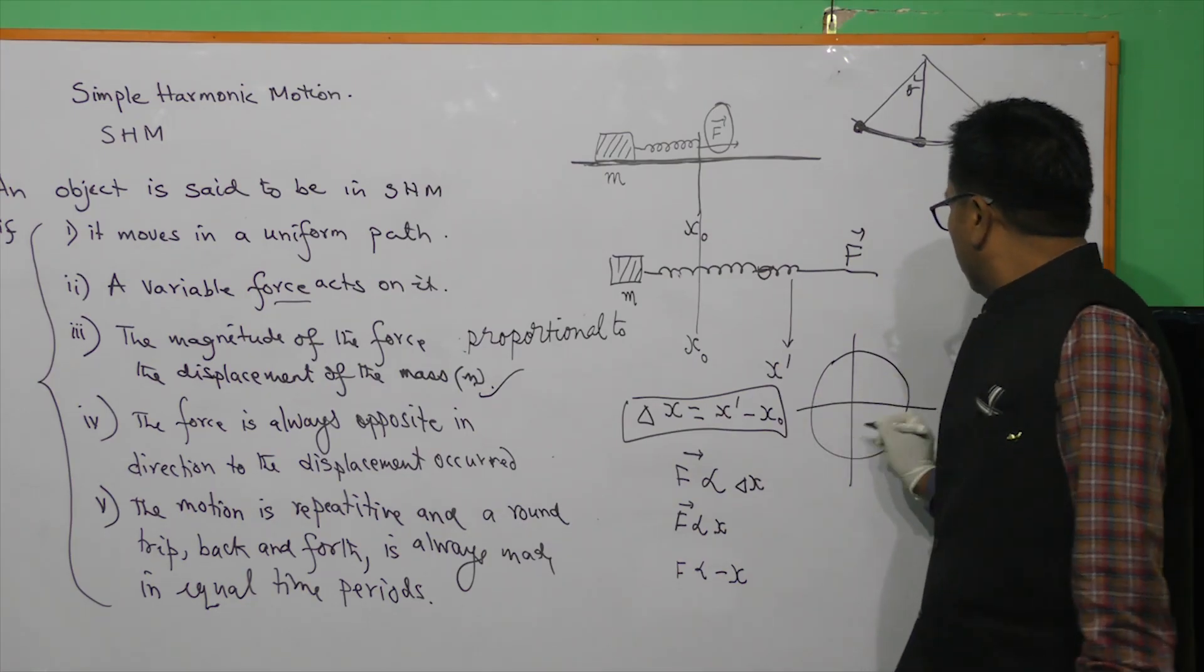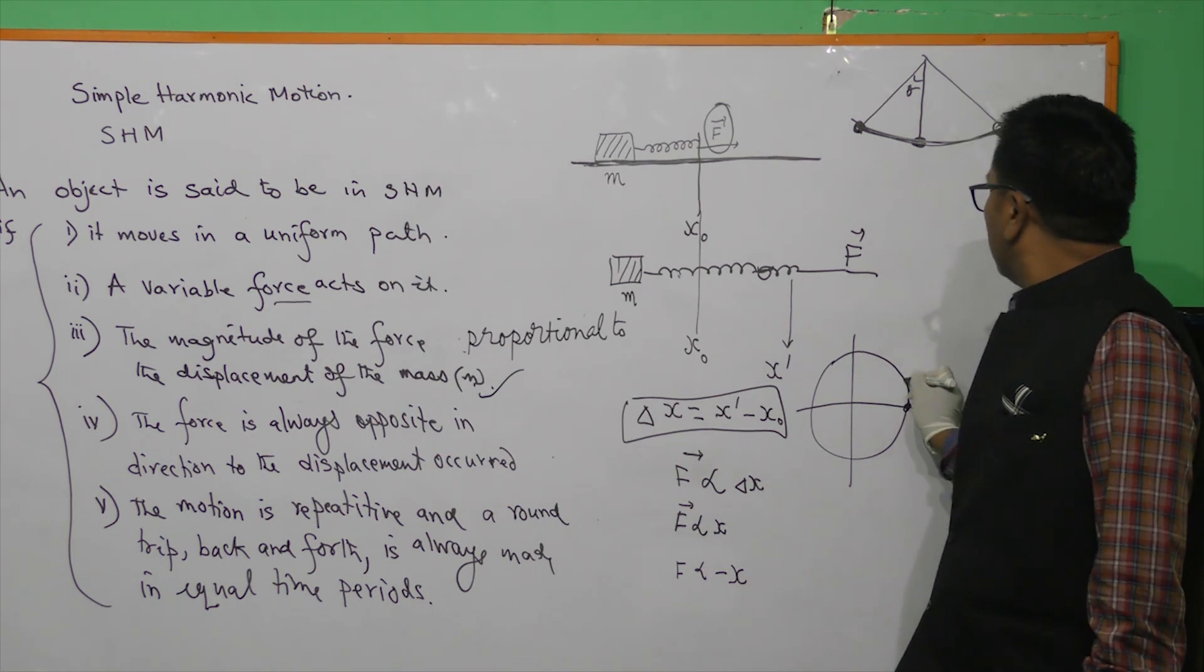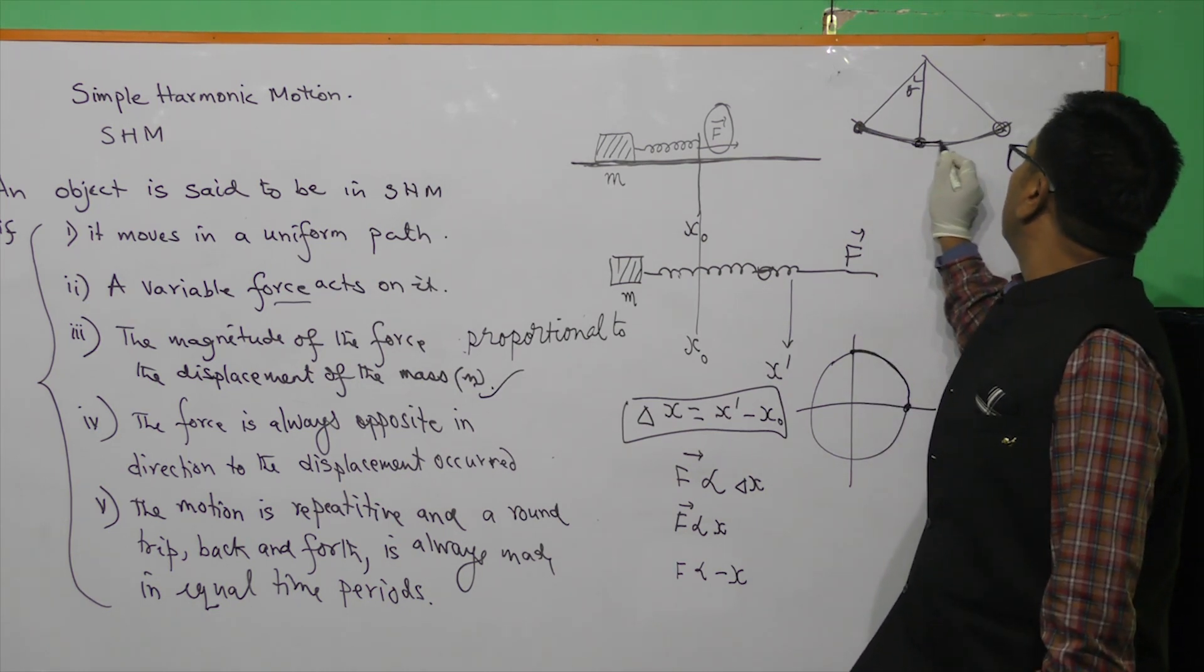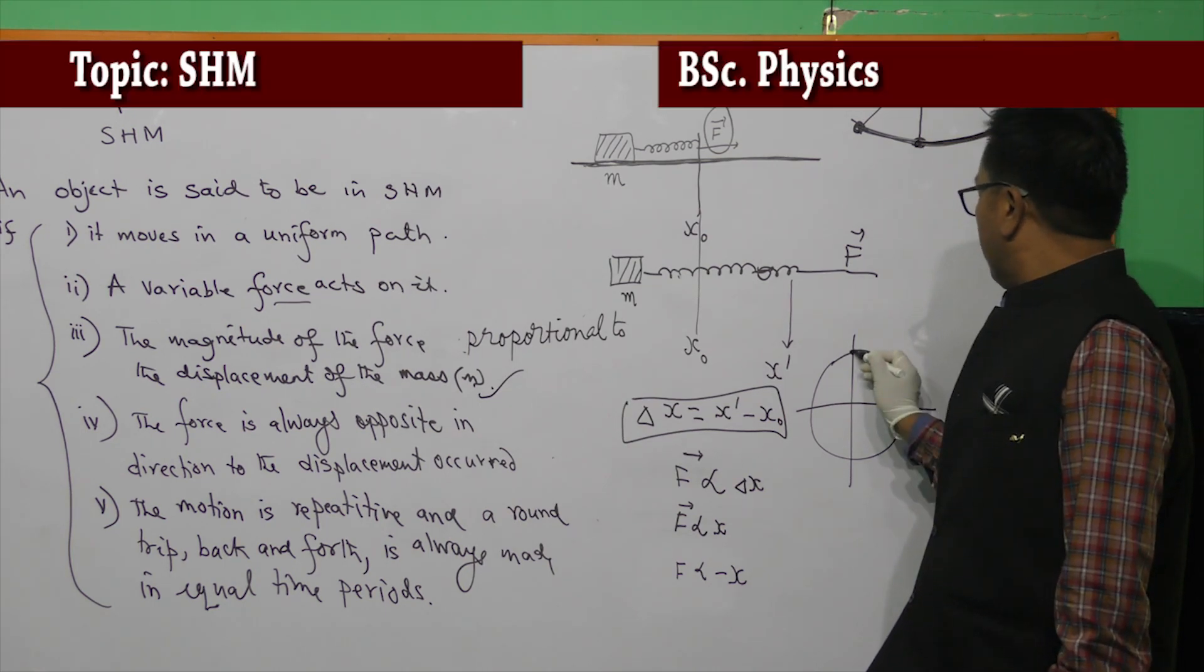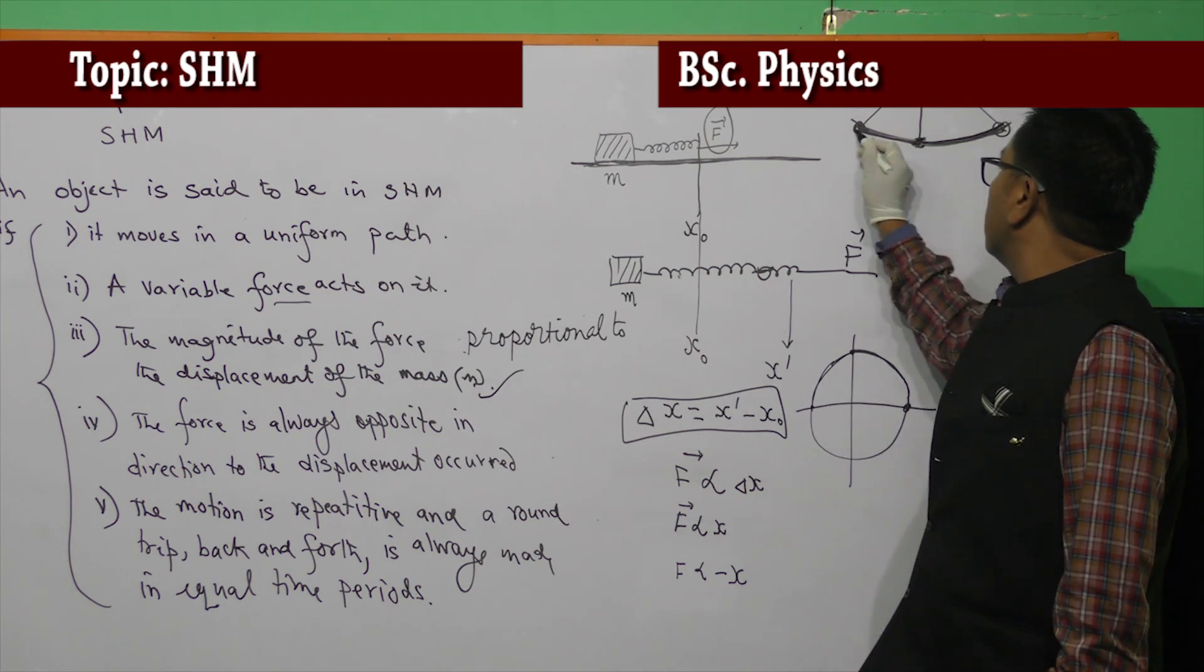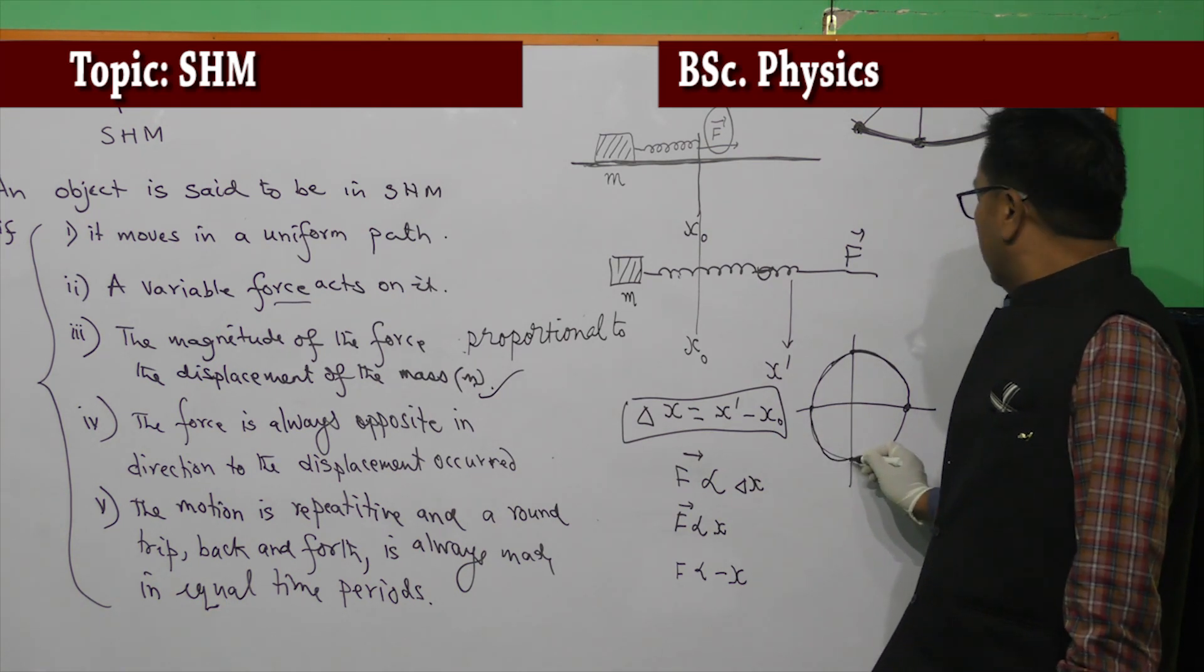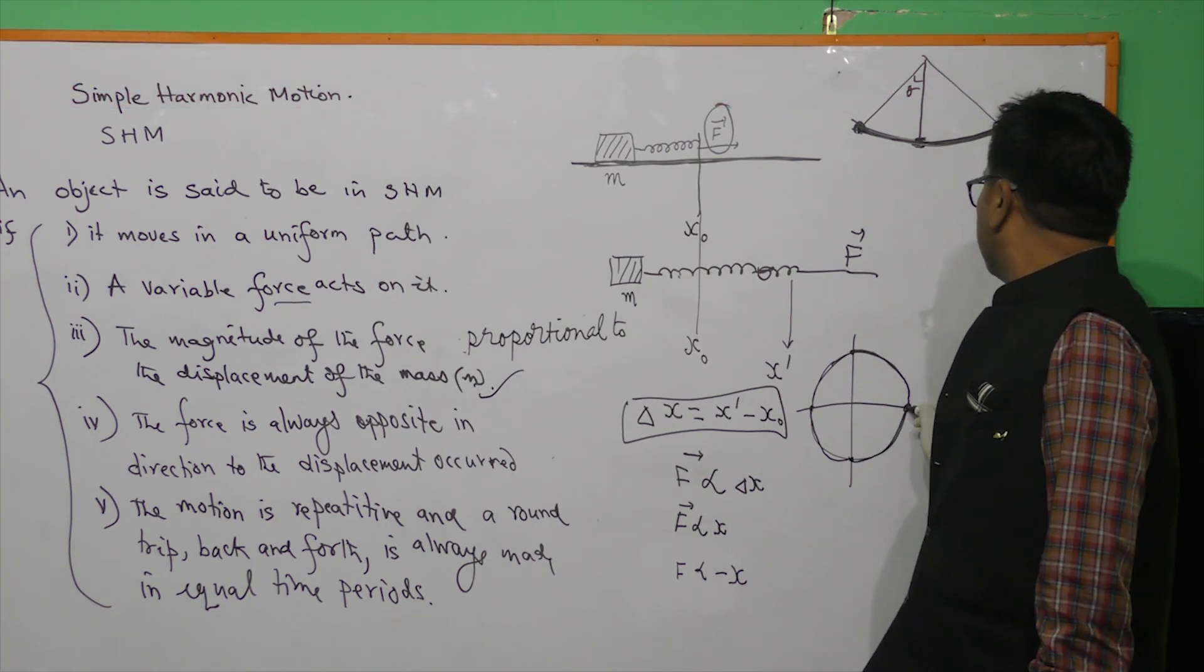Round trip means starting from here, then it goes up to the maximum displacement. Starting from here, it goes to the maximum displacement. This is the point. And then it comes back, it comes back at this position, initial position again. Then it passes through this point and it goes up to this. Then in the negative direction, it goes up to this. And then again, it will come back at this initial position.